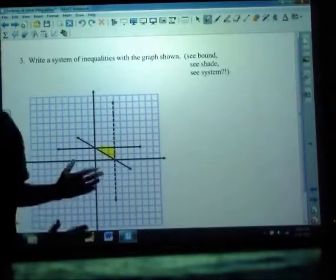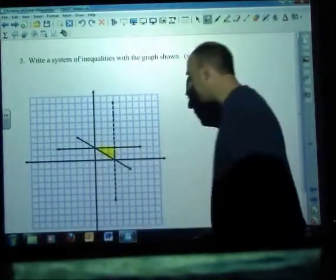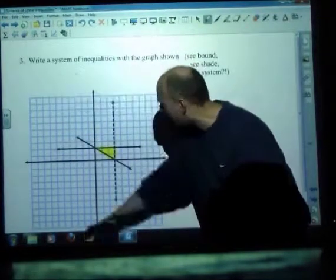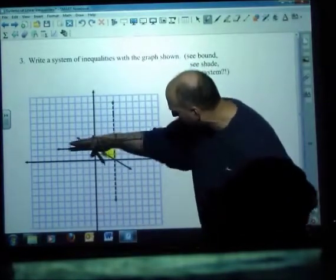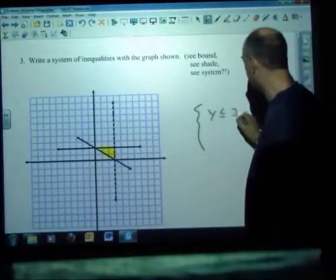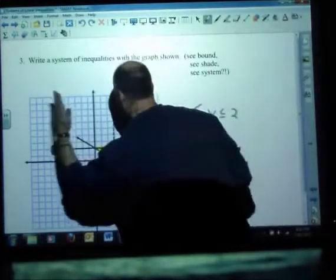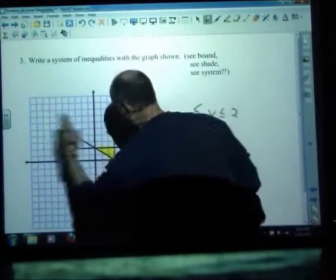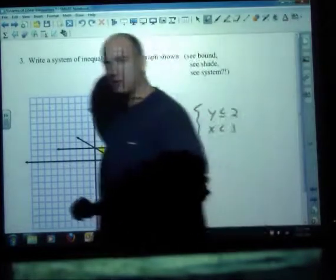Which system of linear inequalities is shown by this graph? Let's look at it. Looks to me like we've got a horizontal boundary, which is a y boundary. So I could say, okay, y is at 2 and it's solid, or it's under that. So I'm thinking y is less than or equal to 2. I also see a vertical boundary, which is placing a boundary on x. X looks like less than 3. Those two should be the easy ones.